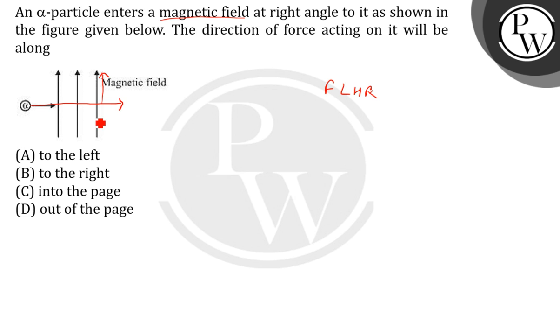Now, aligning our fingers according to this question means we will put the current here - the middle finger will be pointed in this direction and the forefinger in the direction of the magnetic field. Then we can see that the thumb points outside, perpendicular to these two. So it will move out of the page.